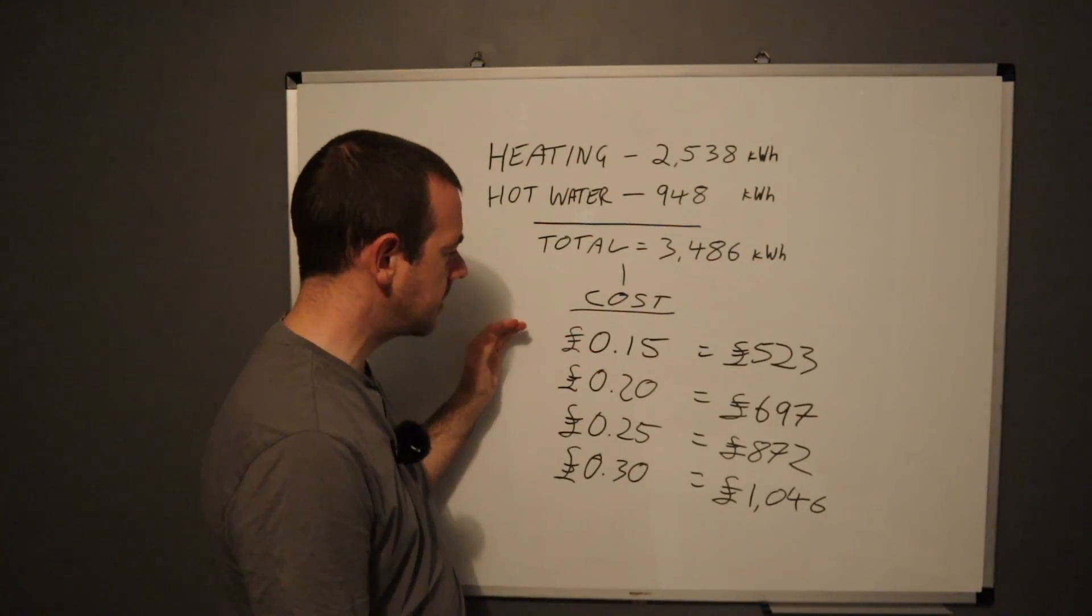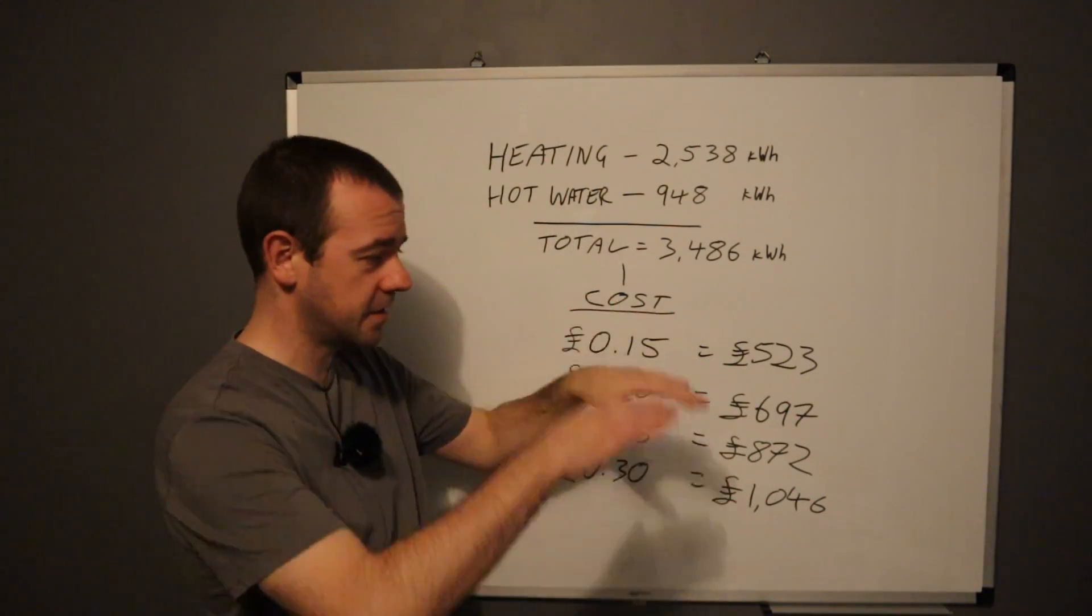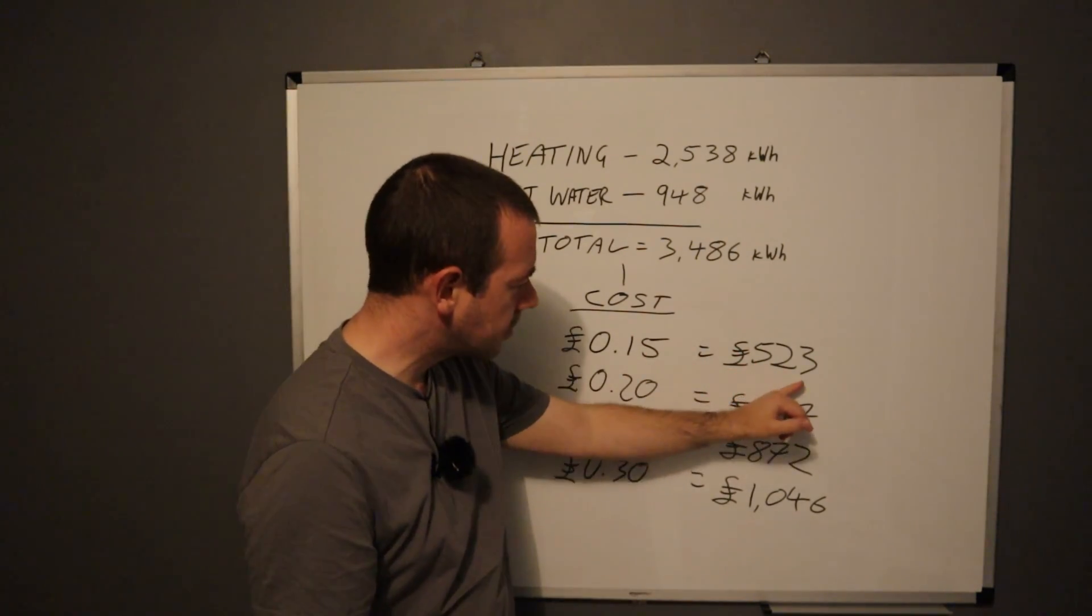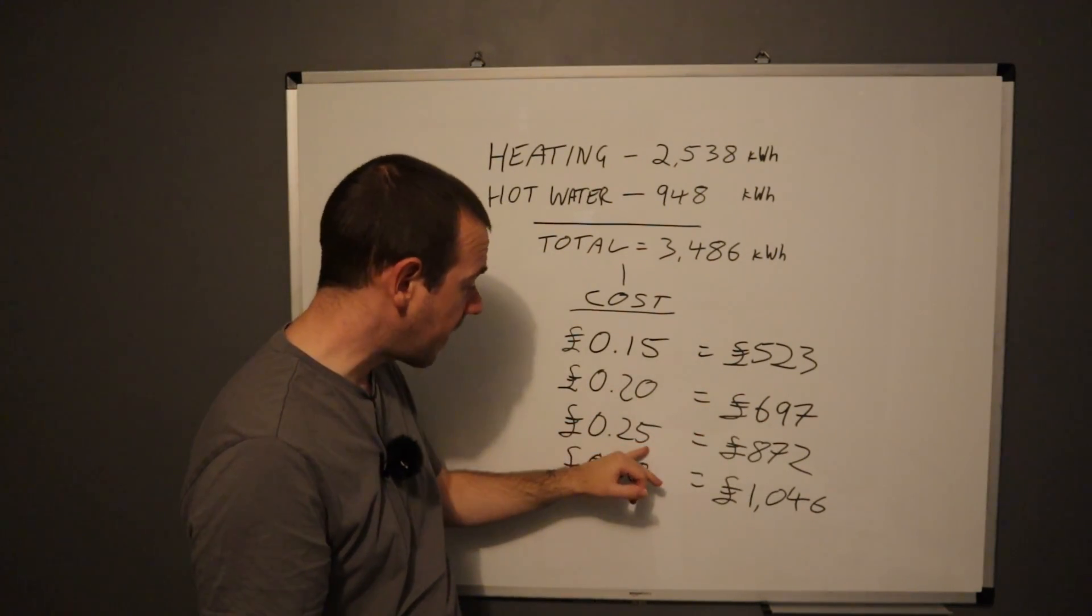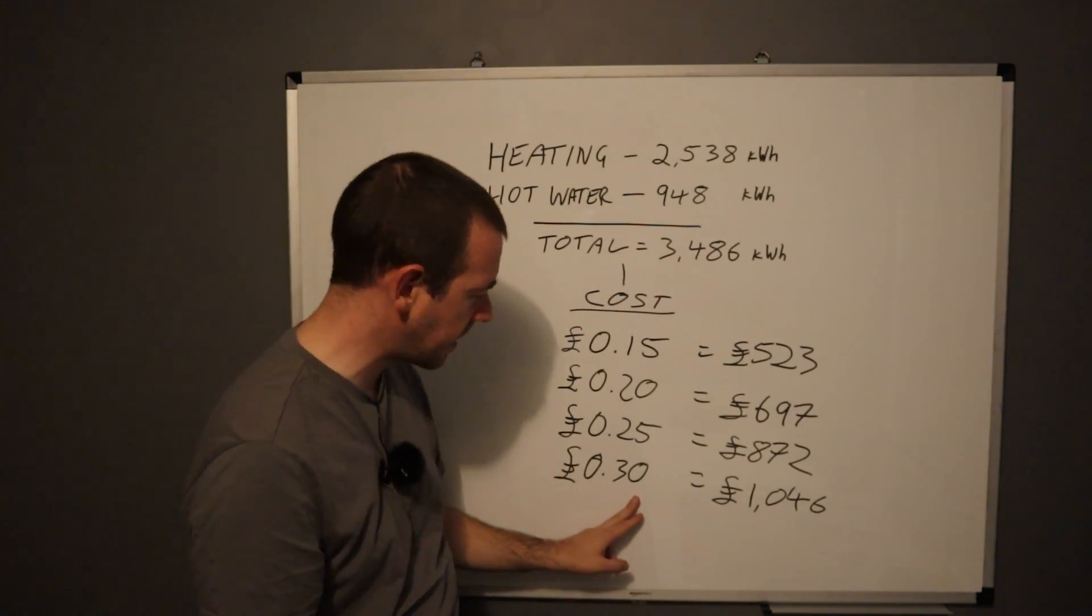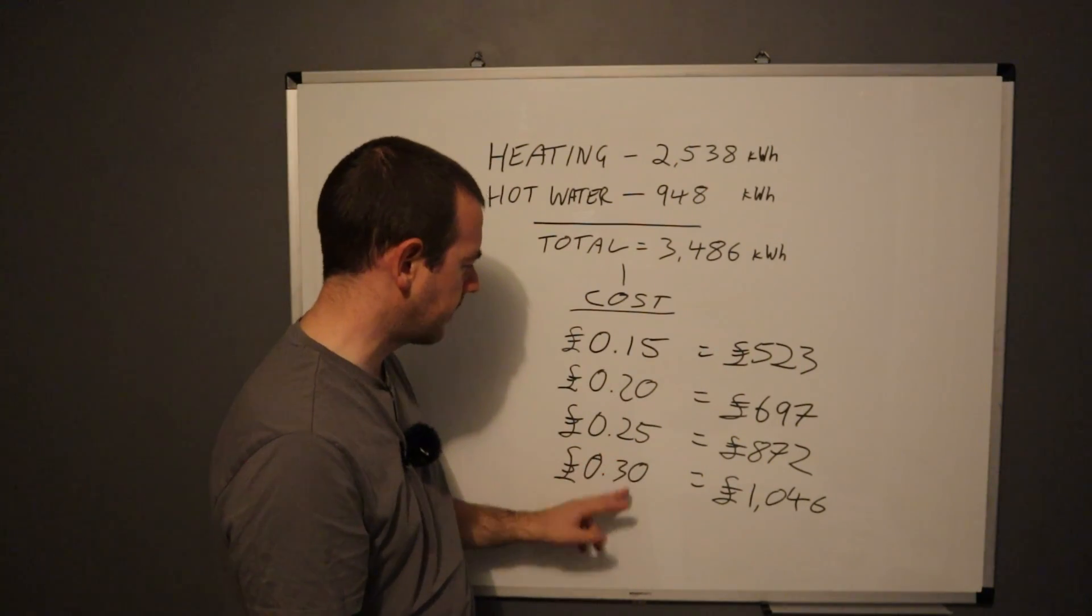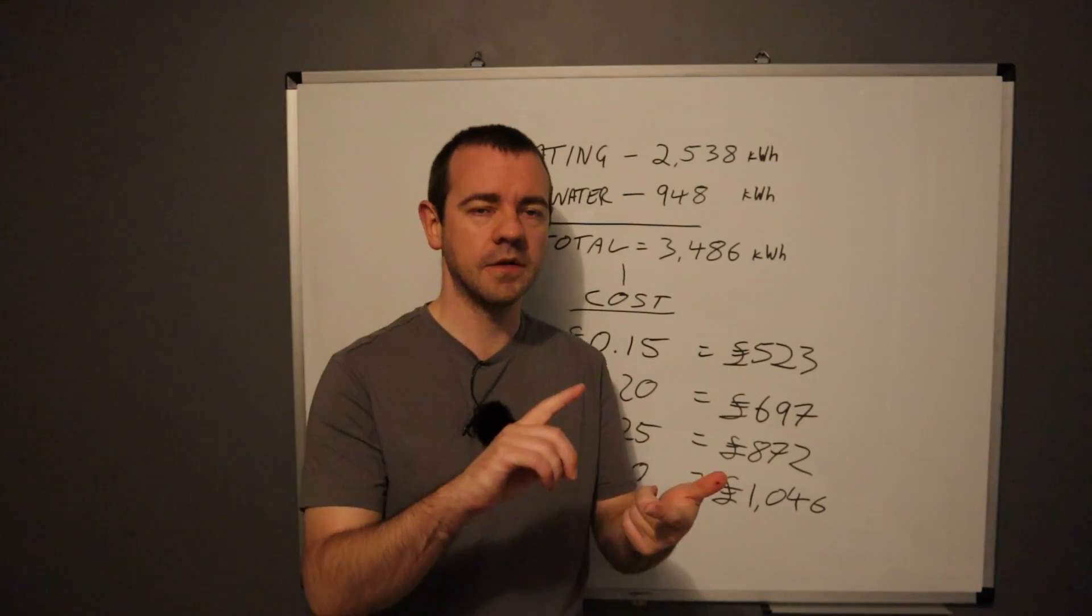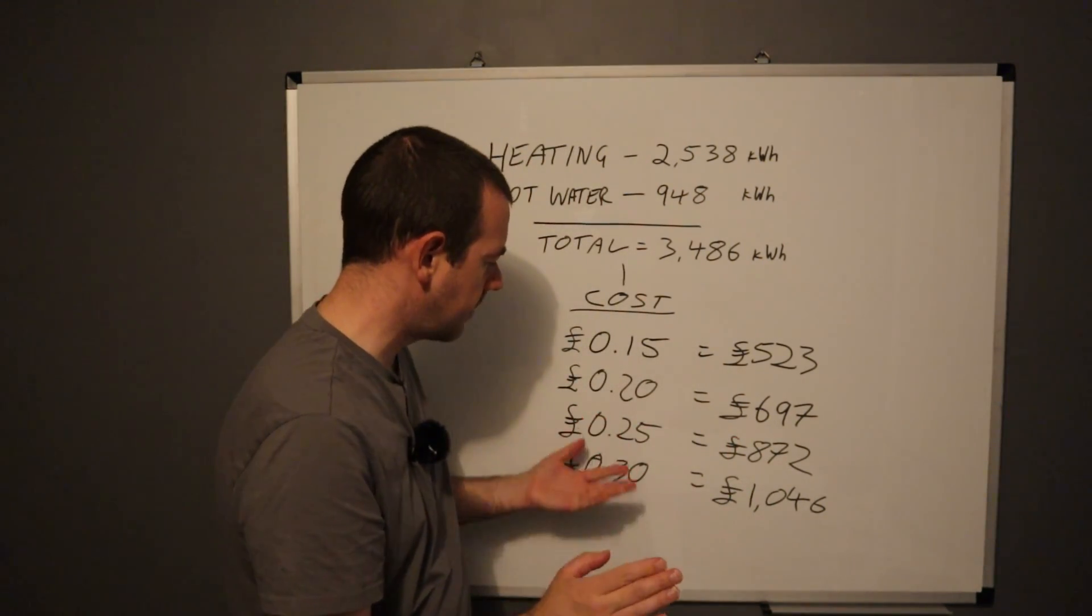Right. So if you average 15 pence per kilowatt hour for your intake, so if you're on a flat rate, this is very simple to figure out, but if you're on a time of day tariff where it changes, then that's where it's quite complicated. But that would cost you 523 pounds if you pay 15 pence. 20 pence is 697. 25 pence per kilowatt hour would cost you 872 based on our usage and 30 pence per kilowatt hour is just over a grand, although no one should be on that now. Even the price cap is lower than that.